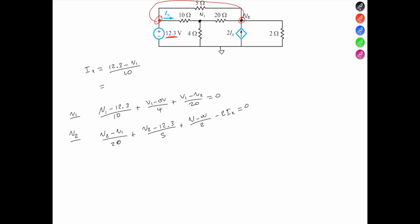You could have 12.3 minus V1 over 5, if you substitute Ix negative 2.